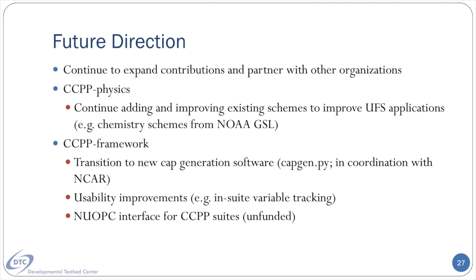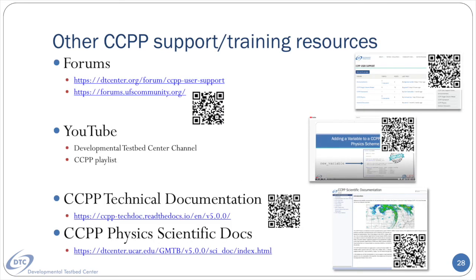We think that the future is particularly bright for the CCPP in general, as we continue to foster relationships with institutions and organizations on the host model side, the physics side, and even the software framework itself. Part of this will be a more robust governance system for incoming physics and changes to existing schemes. For physics in the near future, we will continue to add new schemes as well as support others in doing so, and continue to help improve existing schemes toward the goal of improving UFS applications. As far as the near future for the CCPP framework, there are some exciting changes in the pipeline, including a transition to new cap generation software that will better foster collaboration between NCAR and NOAA models, as well as several usability improvements. Particularly, a new function to track variables within a suite — like which schemes need a variable's input and where the variable is modified. In addition, there is a need to create a new NUOPC interface for CCPP suites that is currently unfunded but will hopefully happen sometime soon.